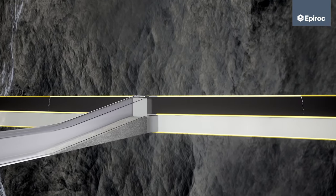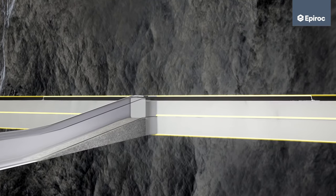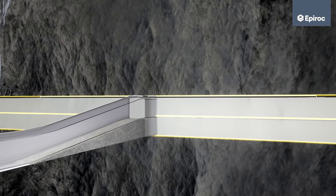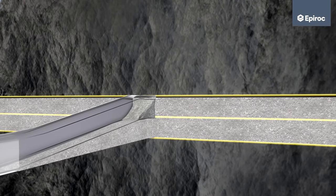One of the advantages with cut and fill mining is the possibility to reuse waste for backfill material, such as tailing sand from the processing plant or waste rock from development.